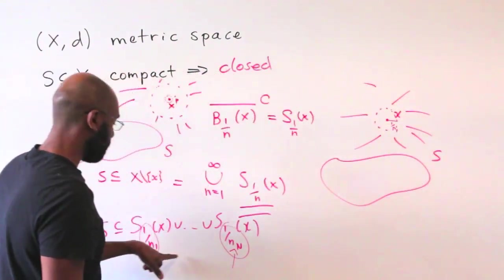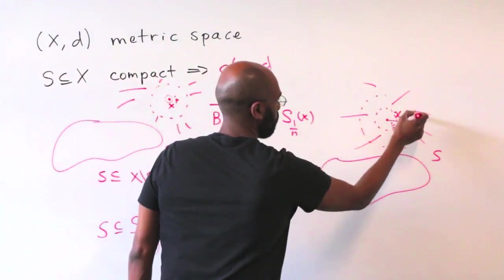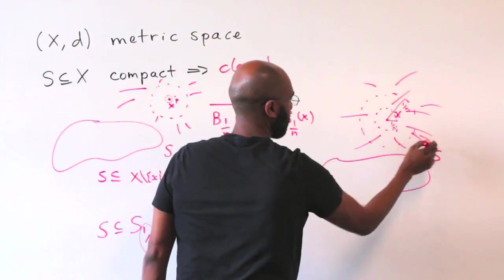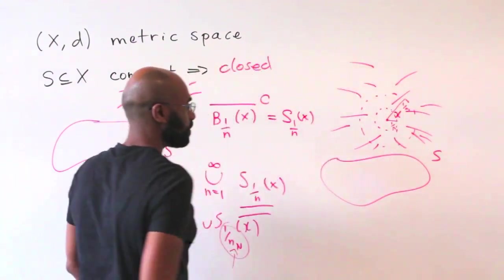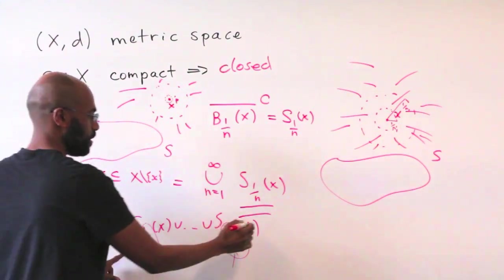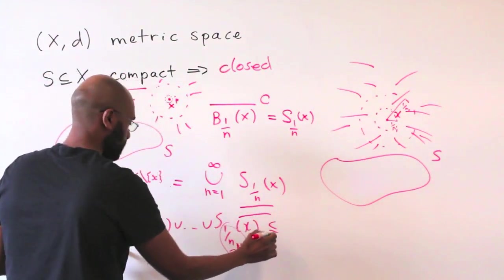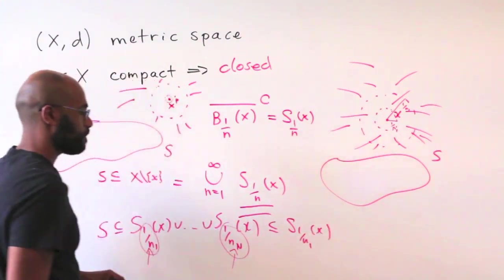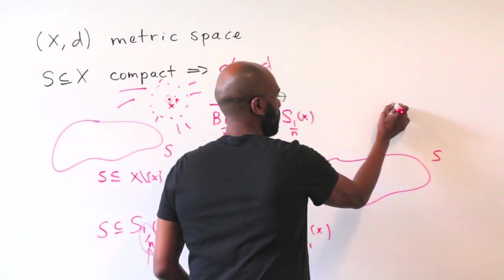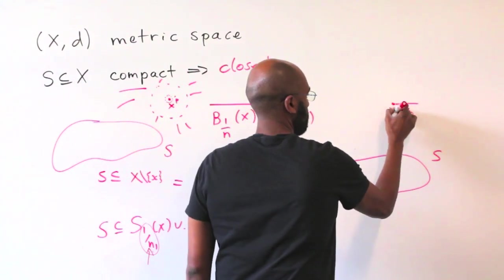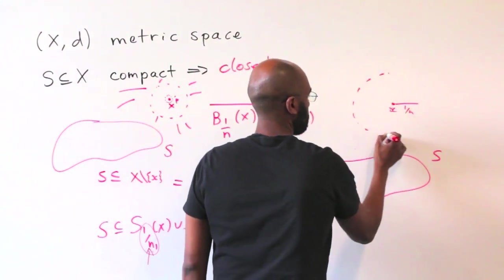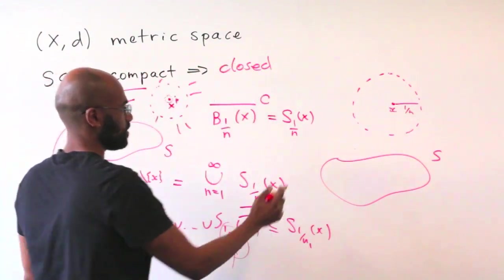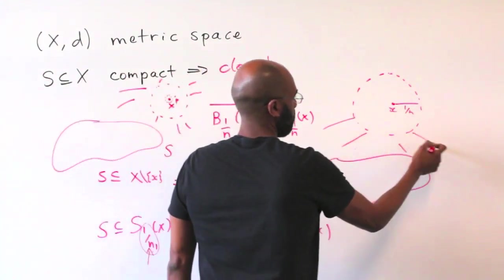Then we have 1 over N2 and everything outside of it, but that's subsumed by the first ball. So this actually all sits inside of S_1/N1(X). We're saying there's a separation from X that looks something like this and S sits inside of everything outside of it.